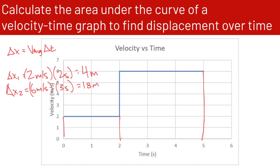So our total delta x is 4 meters plus 18 meters, for a total of 22 meters. That's how to solve it mathematically in this case.